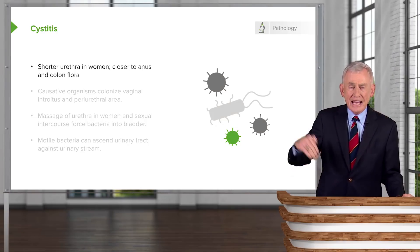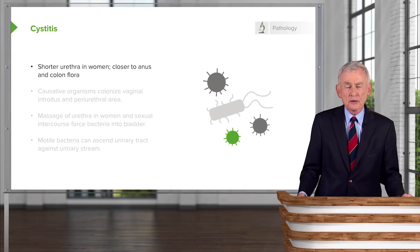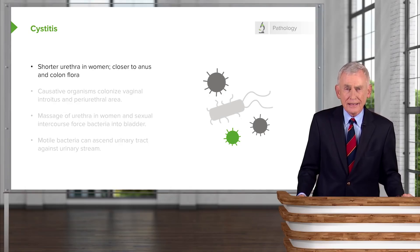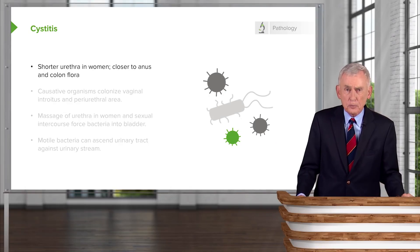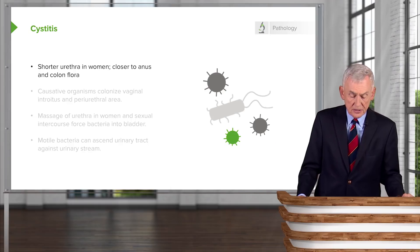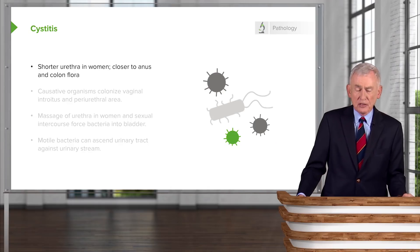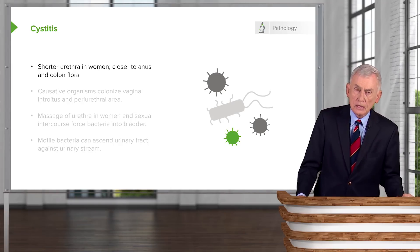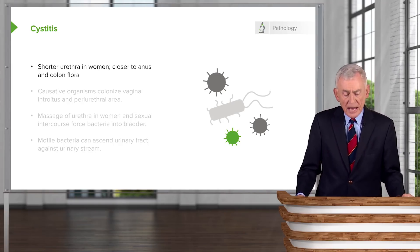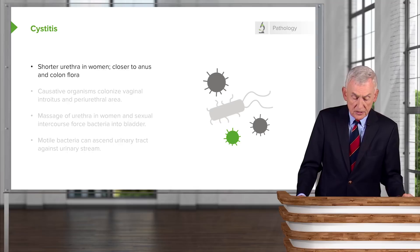There are patients who have a condition called interstitial cystitis, where this glycosaminoglycan is not intact. Since urine is normally acidic, acid urine can reach the deep layers of the bladder, and these patients have a chronic problem with cystitis — but it is not of an infectious nature.